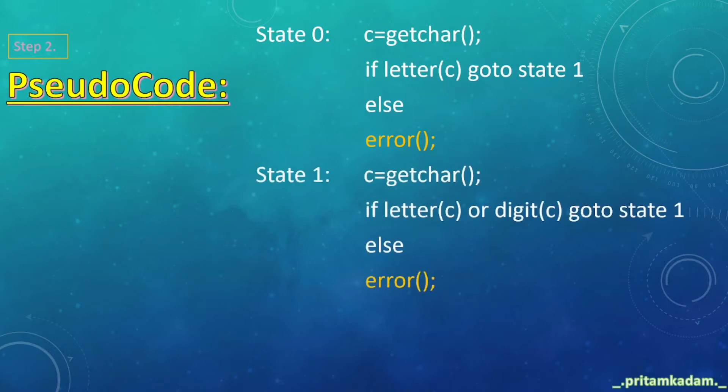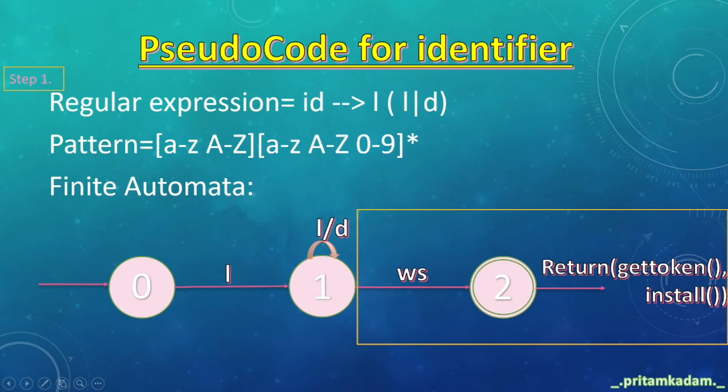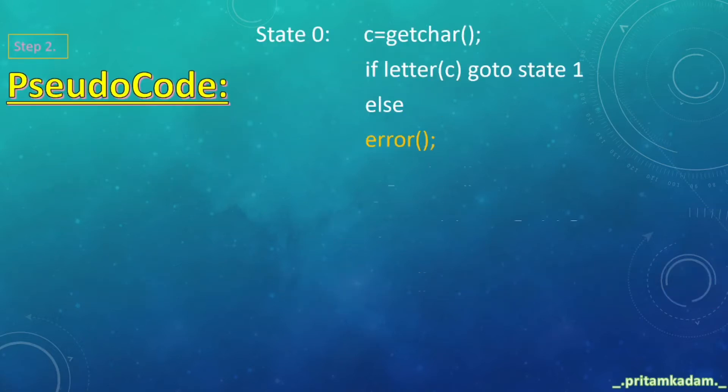So first character should be character only. Then c=getchar(); if letter(c) or digit(c) goto state 1, else error, because in state 1 it was a loop of character or digit, but in state 0 it was only of character.